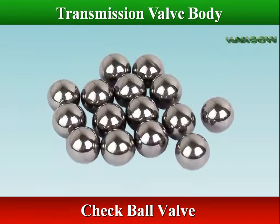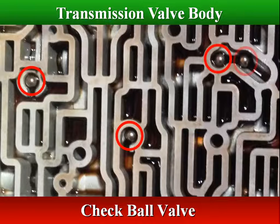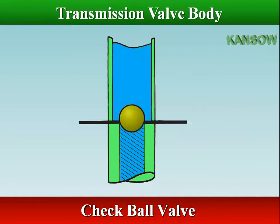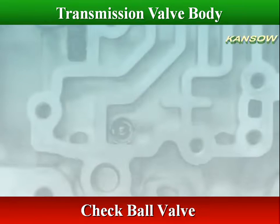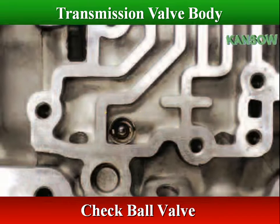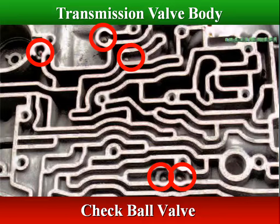A check valve is commonly placed in hydraulic circuits to prevent flow in one direction while allowing flow in the other. The size of an orifice determines its flow rate. These check valves may or may not contain spring pressure to keep them in their seated positions.